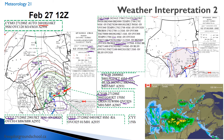Looking at the turbulence and freezing level for 12 Zulu, it still shows the frontal system, and right here there's localized moderate icing from the surface to 3,000 feet, mixed, and the system is moving northeast at 15 knots.